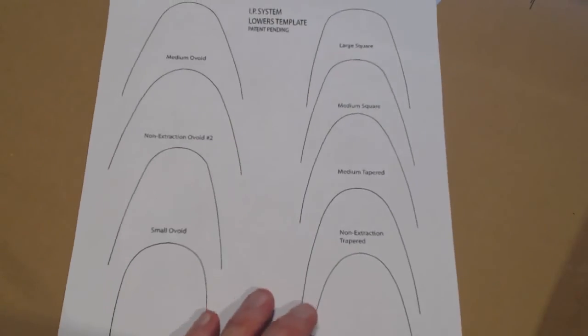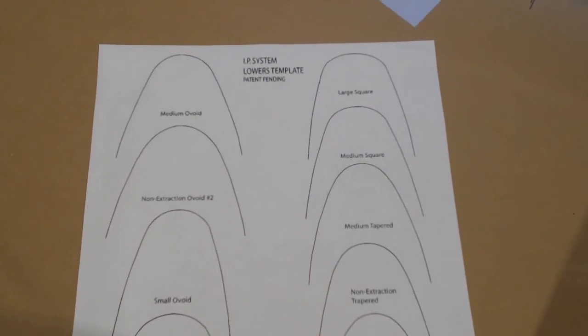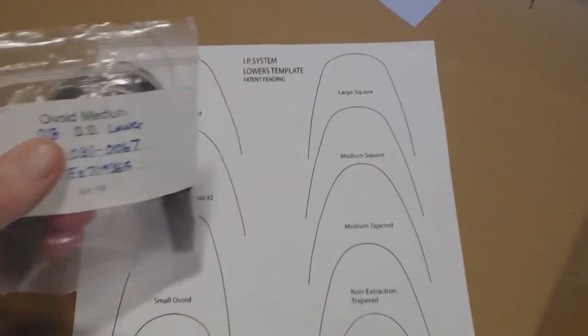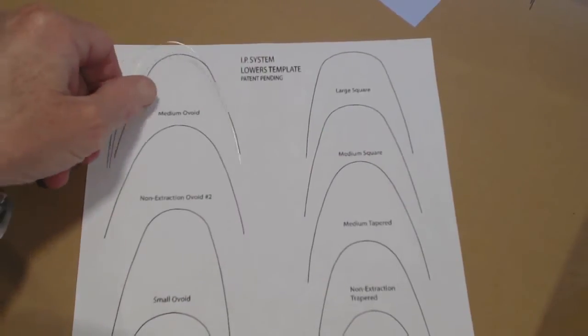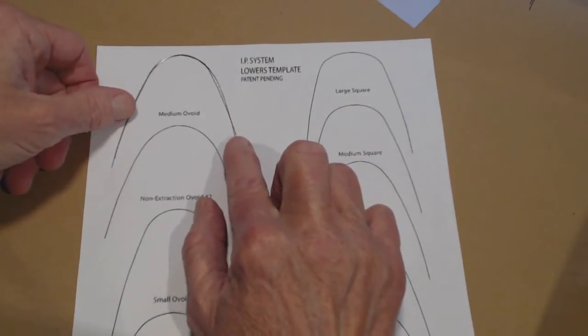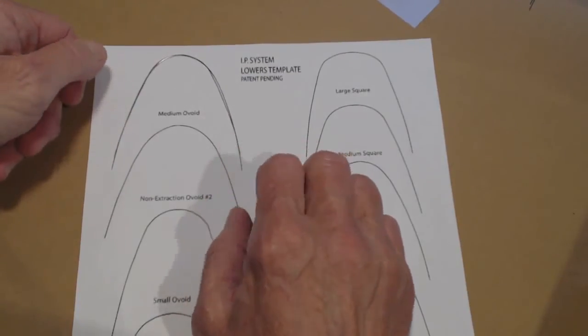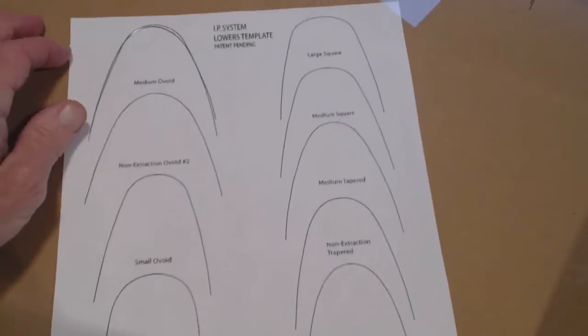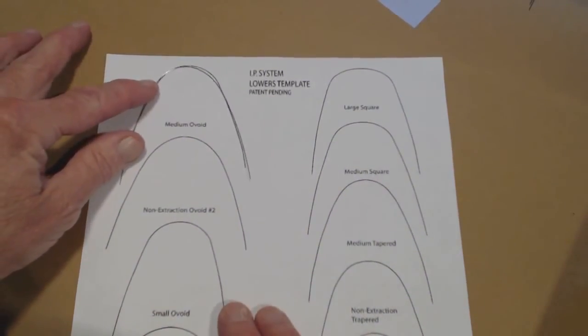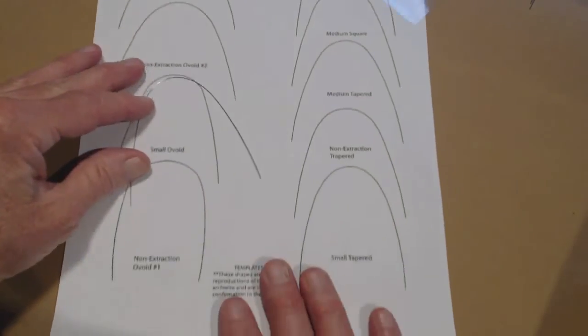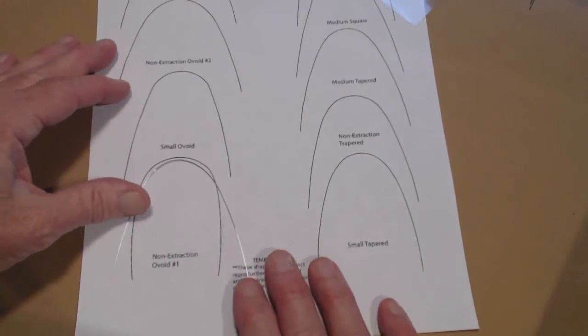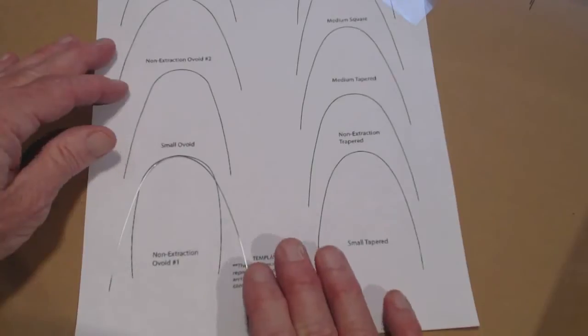What we're going to start with today for the exercise is a medium ovoid that's stainless steel lower. I'll take one out of the bag, and we're going to put it on top of the template to check this. Its shape is pretty close. There's a disclaimer on the bottom of the template that says these are not perfect, but it's pretty close for this endeavor. Now, I want to change this into a non-extraction ovoid 1. So I have to change those radii. The radius in the front for a medium ovoid is too small.